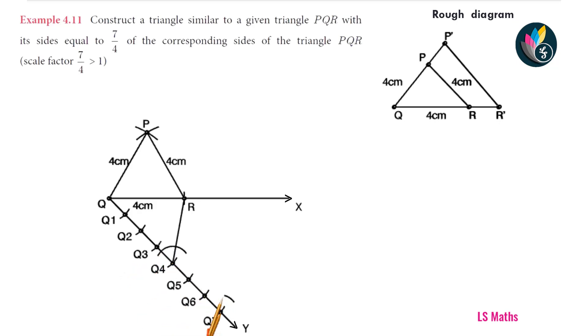Without changing the radius, draw the arc at Q7. Next, mark the point of intersection as I1. Mark the points of intersection of the previous arc. Measure the distance. With this distance as radius, draw an arc at I1.